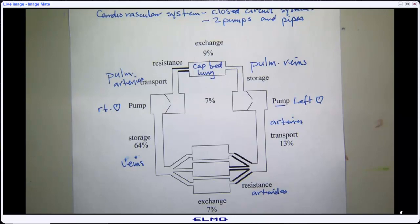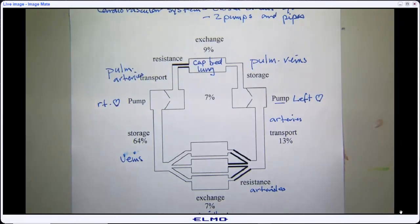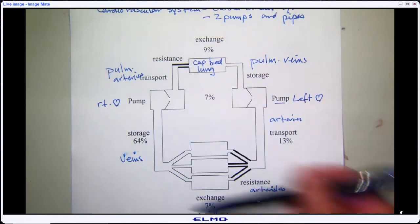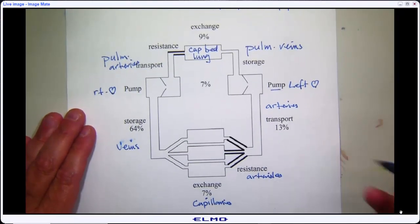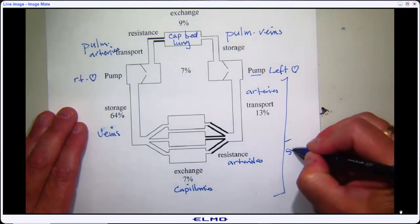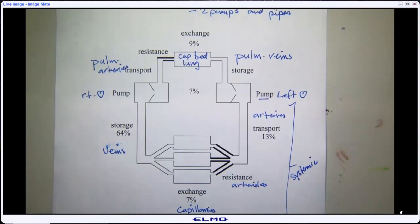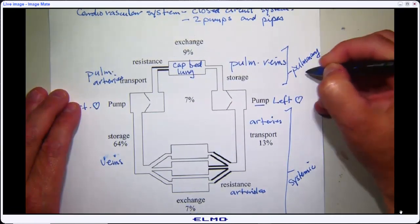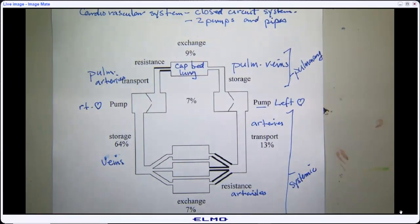Anything between the left heart and right heart through the body is called systemic — systemic arteries, arterioles, capillaries, and veins. Everything between the right heart and left heart through the lungs is called pulmonary — pulmonary arteries, pulmonary capillaries, pulmonary veins. Those two words — pulmonary and systemic — tell you where you are between the left and right heart.